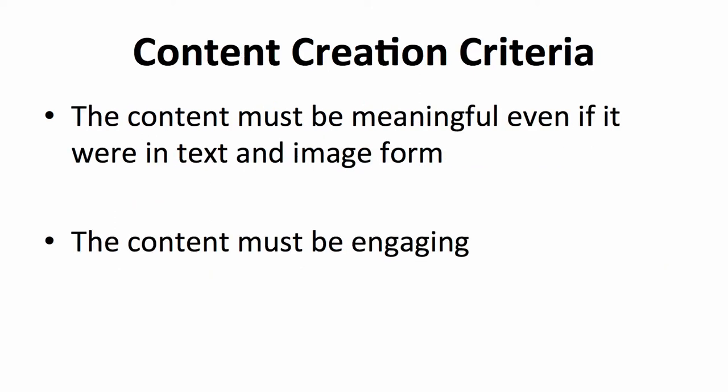The content must be meaningful even if it were in text and image form. Usually to create a video, you must first create a storyboard with just images and text. After you have the storyboard ready, read through it and start imagining the visuals and audio that would fit in. If you can easily imagine your message by just the images and text, you can then proceed with the video. The second criteria for the content is that it must be engaging.